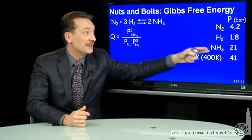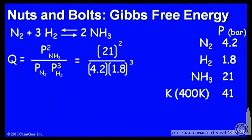I can plug in the conditions I've been given. So if I plug those in, partial pressure of ammonia 21 bar, partial pressure of N2 4.2 bar, partial pressure of H2 1.8 bar, and I can do that calculation. That comes out to 18.